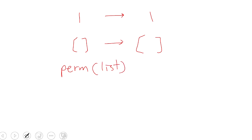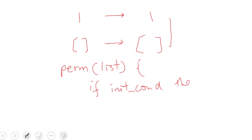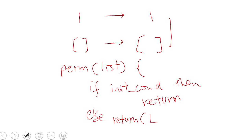We can write the pseudo-code like this: the permutation function receives the list to be permuted. First, we check the base conditions — if it's only one element, return it as a list; if it's empty, return the empty list. Otherwise, we go over each element in the list, swapping the first element with each element in turn, then fix the first element and attach it to all permutations of the sublist.